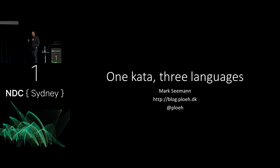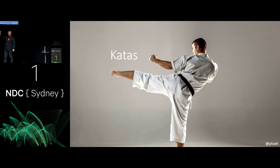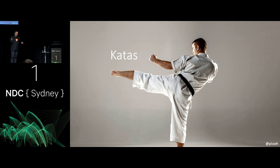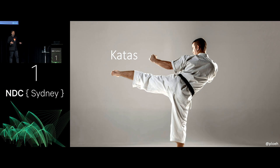Let's talk a little bit about katas. How many of you do katas regularly? Maybe not every day but just once in a while? Not a lot. I think you should consider doing katas. The concept of a kata actually comes from martial arts — that's why the karate guy is there. The word is Japanese and means something like 'form.' The idea is that sometimes you want to train but you don't have a sparring partner, so you go through some motions to build up muscle memory.